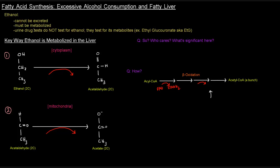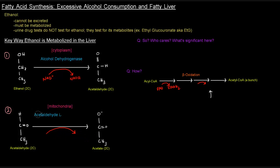One of the key ways that ethanol is metabolized in the liver involves two steps. First, ethanol is converted to acetaldehyde in an oxidation reaction. The enzyme that catalyzes this is alcohol dehydrogenase — we've actually seen this enzyme before in alcohol fermentation, where it catalyzed the reverse reaction to regenerate NAD+ for glycolysis. In this case, we're going toward acetaldehyde, so we generate NADH, which can give us energy. Then in the mitochondria, acetaldehyde is further oxidized to acetate by acetaldehyde dehydrogenase, consuming NAD+ and producing another NADH.